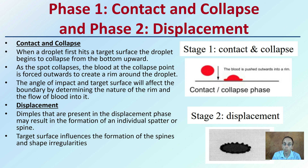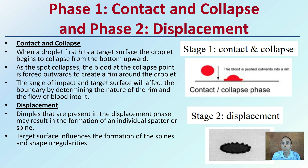The angle of impact on the target surface will affect the boundary by determining the nature of the rim and the flow it falls onto. Also, the target surface — the more porous it is versus the more solid it may be — is going to really affect how it goes through this contact and collapse phase.